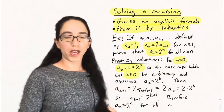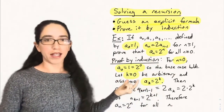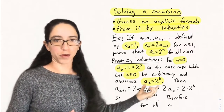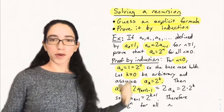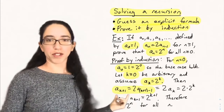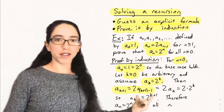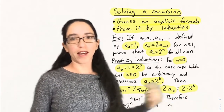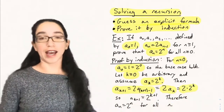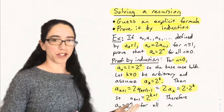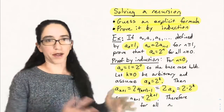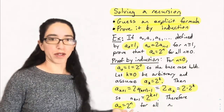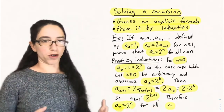And then for the induction step, let k be greater than or equal to 0, an arbitrary integer for which aₖ equals 2 to the k. We want to show aₖ₊₁ is 2 to the k+1. Well, by the recursion, this is twice aₖ, the previous number, and aₖ is 2 to the k. So we get 2 times 2 to the k, which is 2 to the k+1, which is exactly what we wanted. So there's an example of an inductive proof showing the explicit formula aₙ equals 2 to the n for all n.